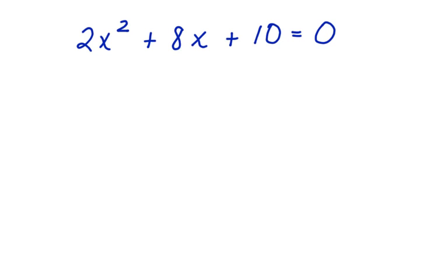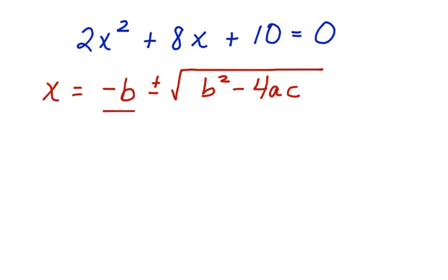We're going to solve this using the quadratic formula. Here's the quadratic formula. We're solving for x, so we say x is equal to negative b plus and minus the square root of b squared minus 4ac divided by 2a.